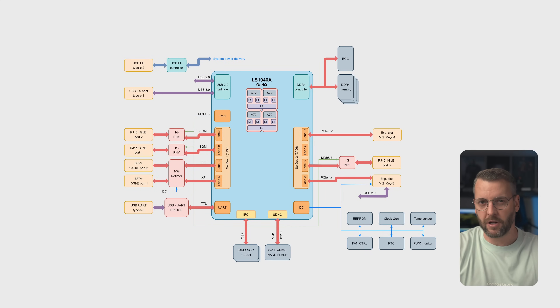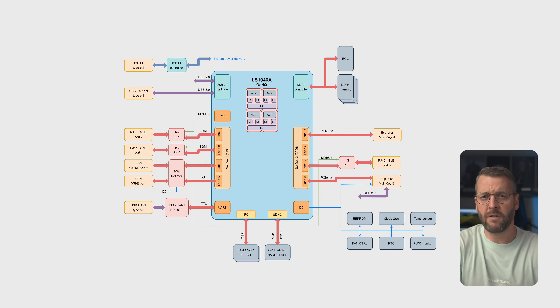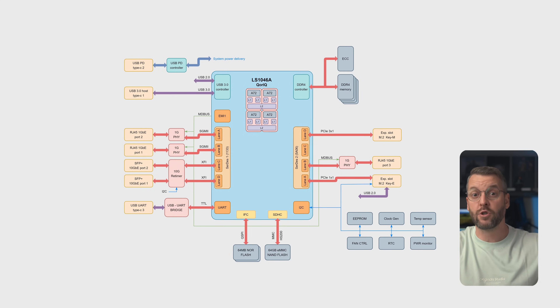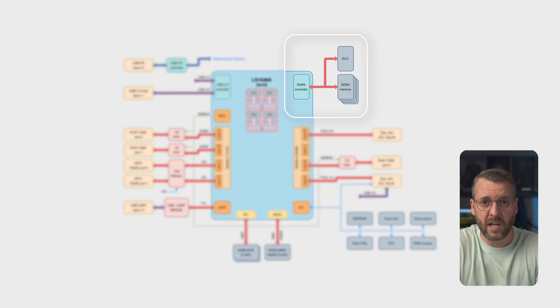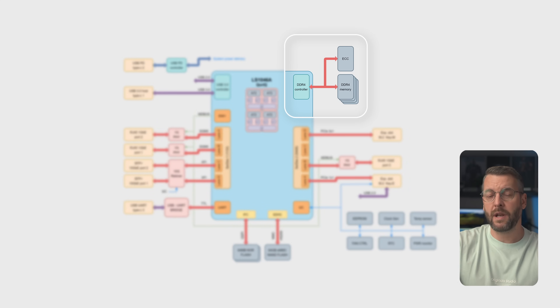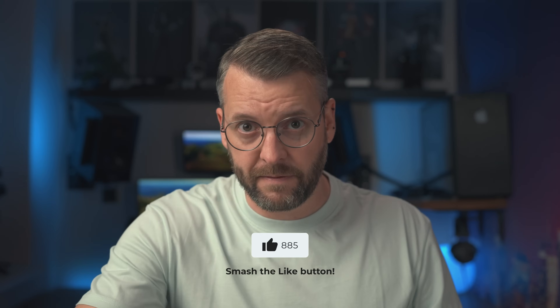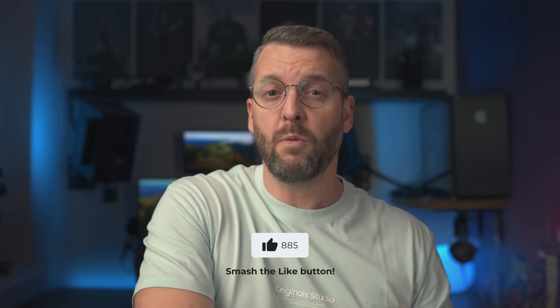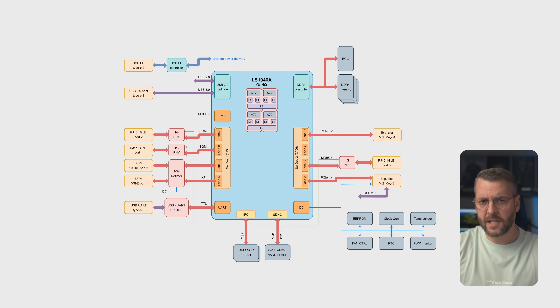Now it's time to get back to the overview with this block diagram. For those following along, you've probably seen a cruder version some months ago, but this is now the final version of how the device will look. Starting at the top right with memory: we're planning four embedded memory modules with an optional ECC chip. Schematics for this part have already been drawn, with two possible parts giving us either 16GB or 8GB of RAM.